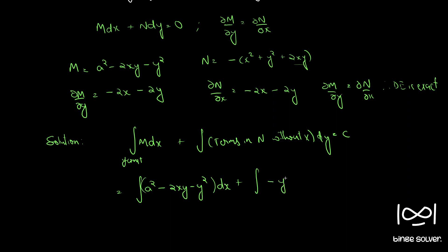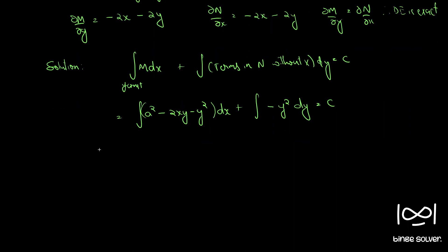When we integrate we get: x³/3 - 2y · (x²/2) - y²x, and the second integral gives -y³/3, equal to c. This simplifies as the 2's cancel.